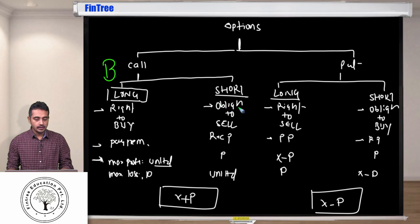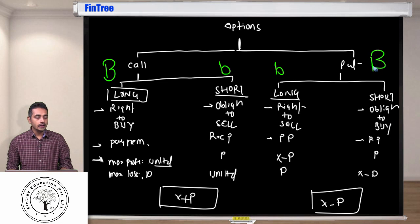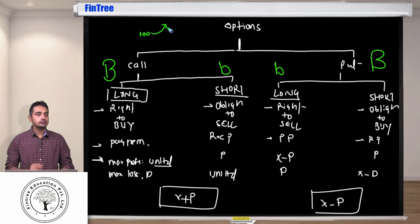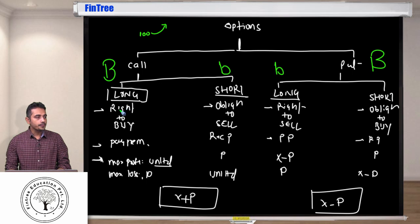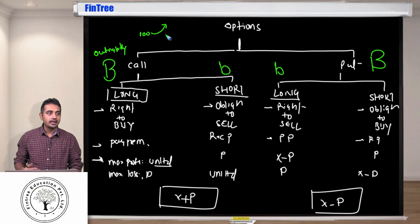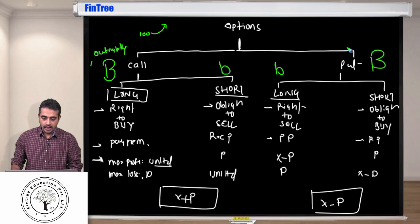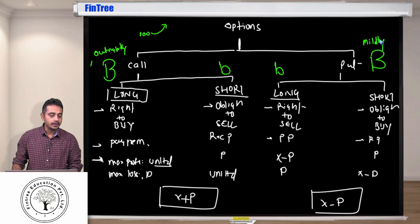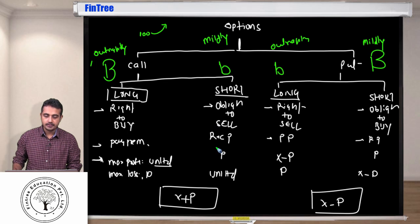A long call is a bullish position — you're expecting markets to go up. A short call is bearish, and a long put is bearish, while a short put is bullish. So if a stock price is currently 100 and you're expecting it to go up, you're bullish on the underlying asset. The question is: should you take a long call or a short put? When you are outrightly bullish — expecting a significant jump — long call is the strategy. When you are mildly bullish, short put is the strategy.